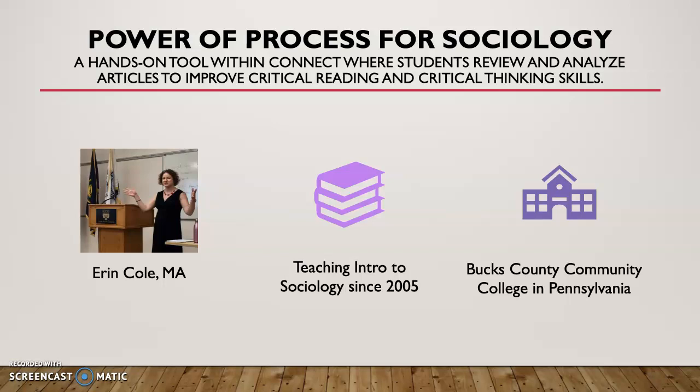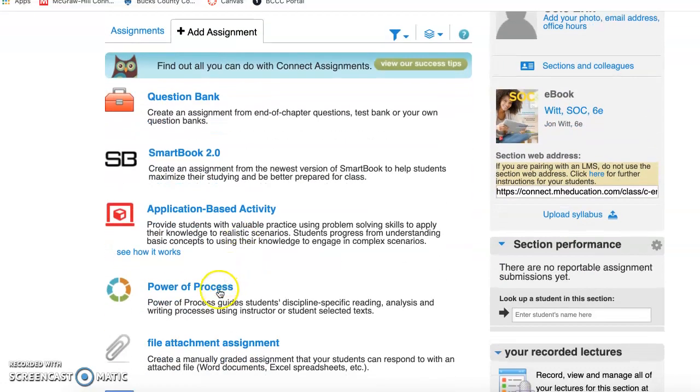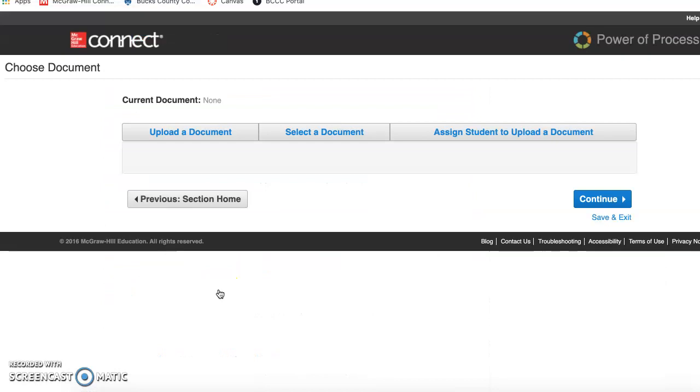This video is going to walk you through how to set up the assignment and what the assignment looks like from a student view. Once you're in Connect, you're going to hit Add Assignment and scroll down to Power of Process.